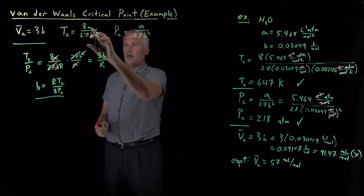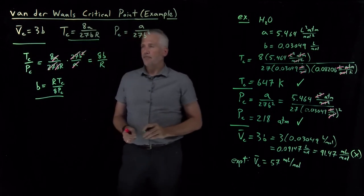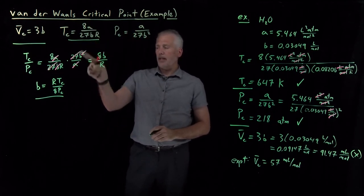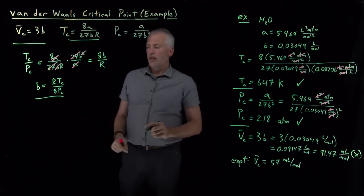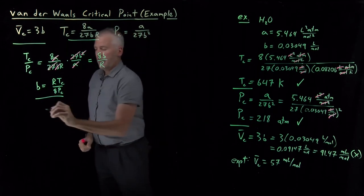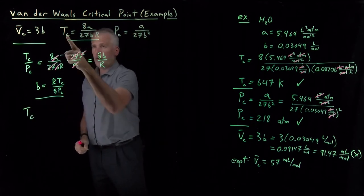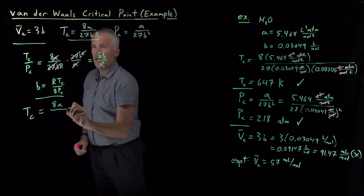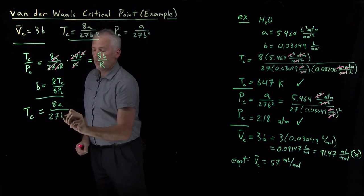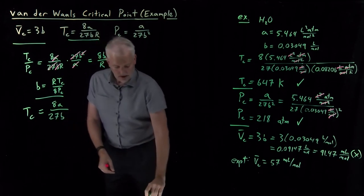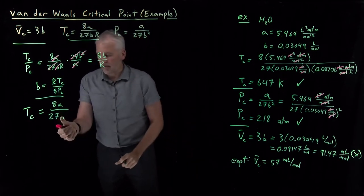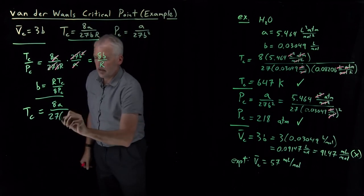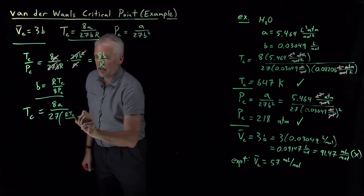Likewise, I can solve for A. Let's go back to this expression, which has an A and a B in it. I know now what B is equal to, so if I say critical temperature is equal to 8A over 27B, and for B I'll use that expression we've just derived, RTC over 8PC.